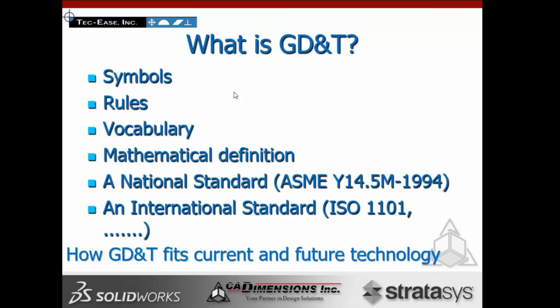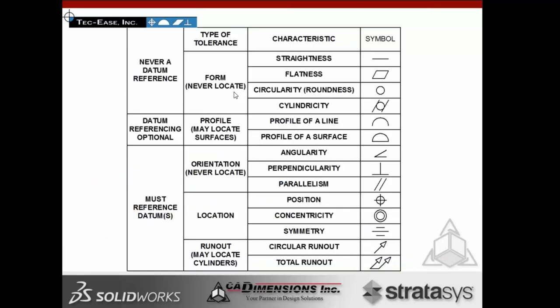I want to talk about how GD&T fits current and future technology. Let's look at the symbols — there are 14 of them. They all have different characteristics and controls: form, profile, orientation, location, runout — characteristics like straightness, flatness, circularity, and cylindricity, and the list goes on. One important thing to understand: GD&T is not difficult. What's difficult is the misapplication of GD&T. When we understand the form controls and characteristics, things get a lot easier.